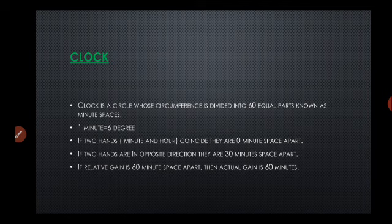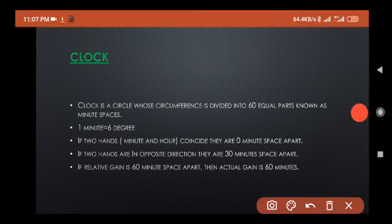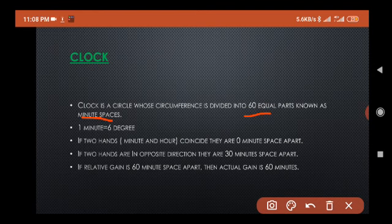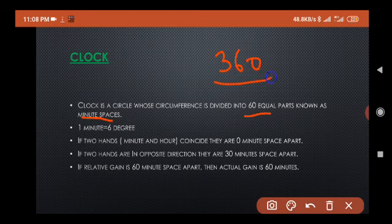The next topic is clock. What are the things we have to keep in mind when studying about the clock? Clock is a circle whose circumference is divided into 60 equal parts, known as minute spaces. One minute space is equal to 6 degrees, like 360 degrees divided by 60.